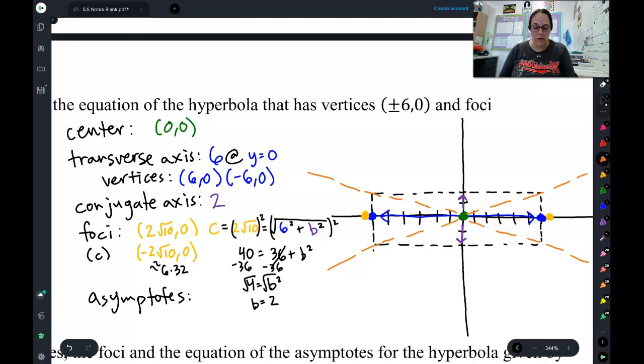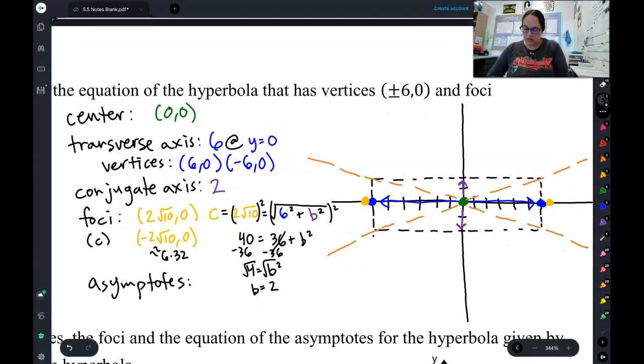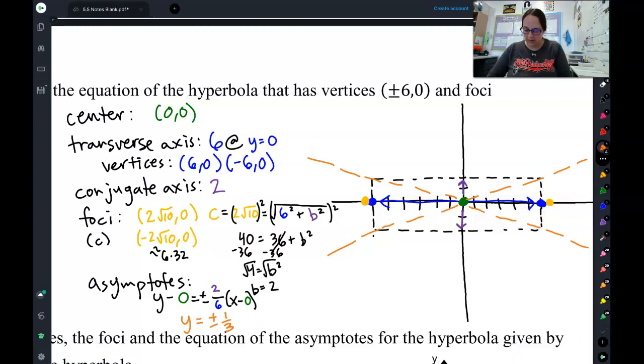And finally, I can write the equation for my asymptotes. This is going to be Y minus K, which is 0, equals plus or minus. And then I've got rise. So, I rise 2 in my guide box, I ran 6 in my guide box, and then X minus H, which is also 0. So if I simplify that, I get Y equals plus or minus 1 third, simplify the 2, 6, X. And there's my asymptotes.